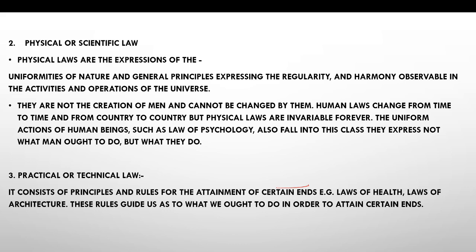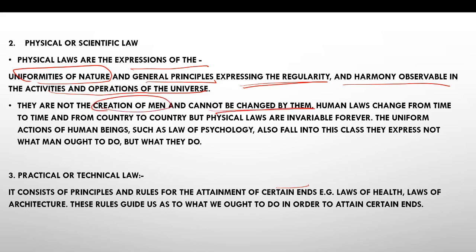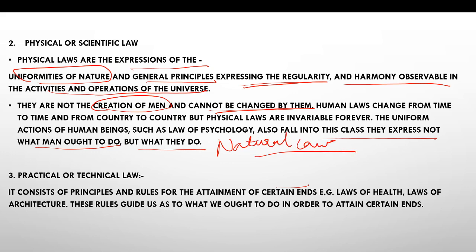Physical or scientific law is the expression of the uniformity of nature — general principles expressing the regularity and harmony observable in the activities and operations of the universe. They are not the creation of men and cannot be changed by them; these run scientifically from before. They express not what humans ought to do, but what they actually do — natural laws that change with nature over time. Practical or technical law consists of principles and rules for the attainment of certain ends, for example laws of health and architecture — these rules guide us on what we ought to do in order to attain certain ends.